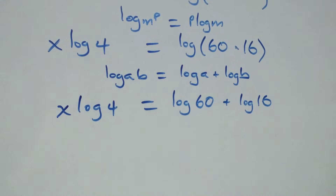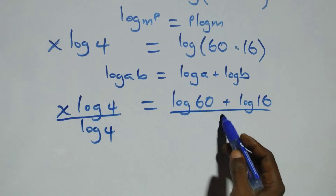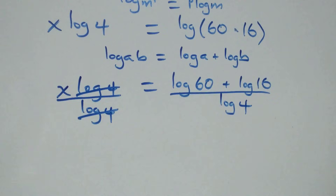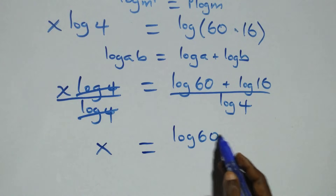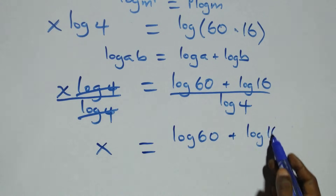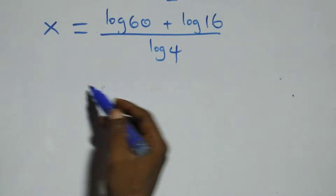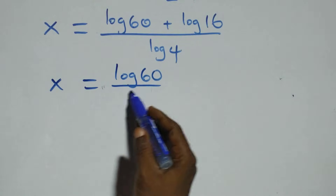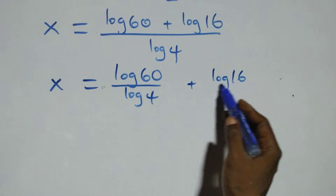We divide both sides by log 4. The log 4 cancels on the left side, and we have x equals log 60 plus log 16 over log 4. We separate this into two fractions and have x equals log 60 over log 4 plus log 16 over log 4.